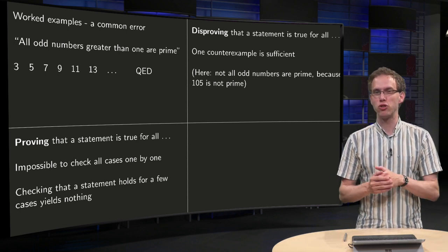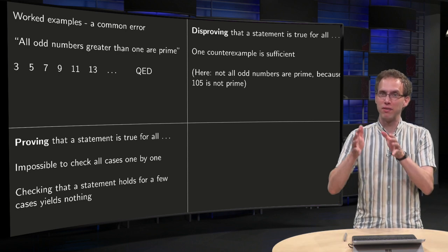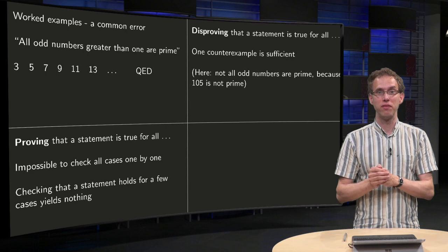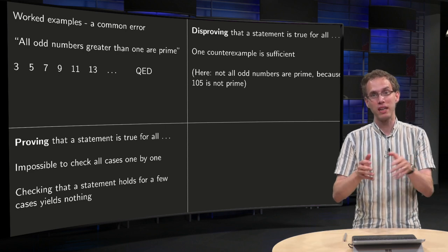I think this is the source of the confusion. You can give a counterexample to prove that something is not true, but you cannot give an example to show that something is true.